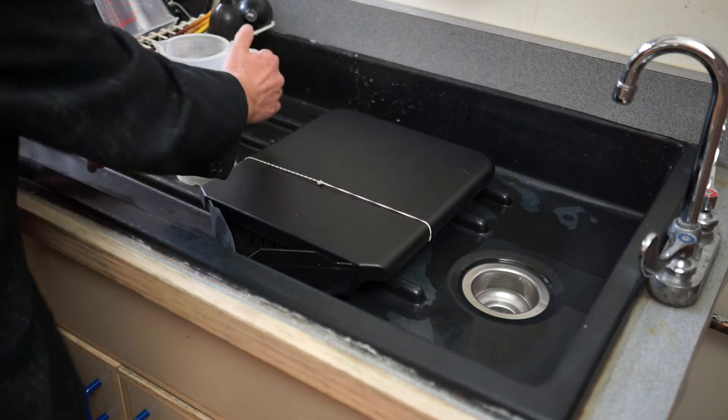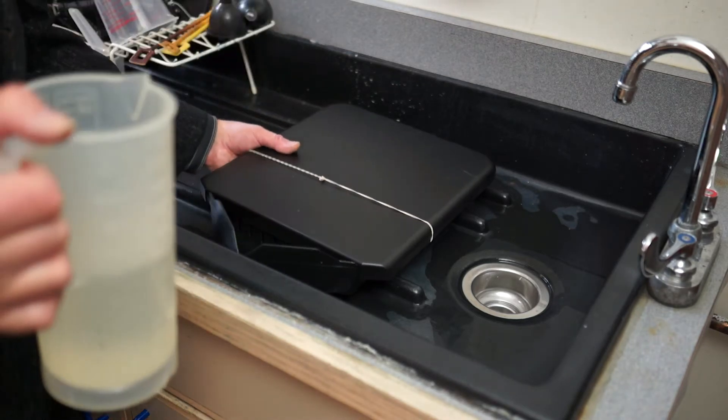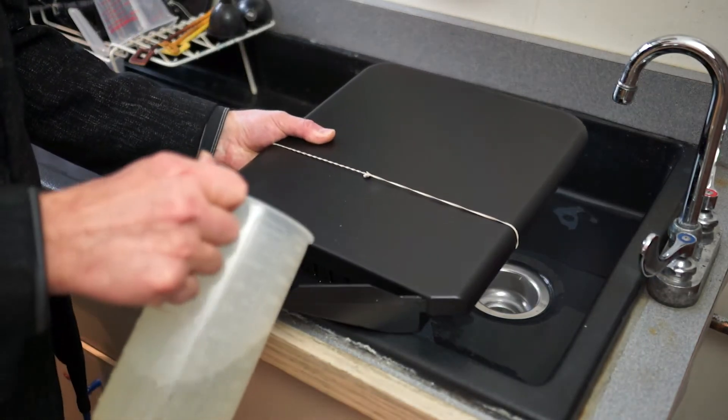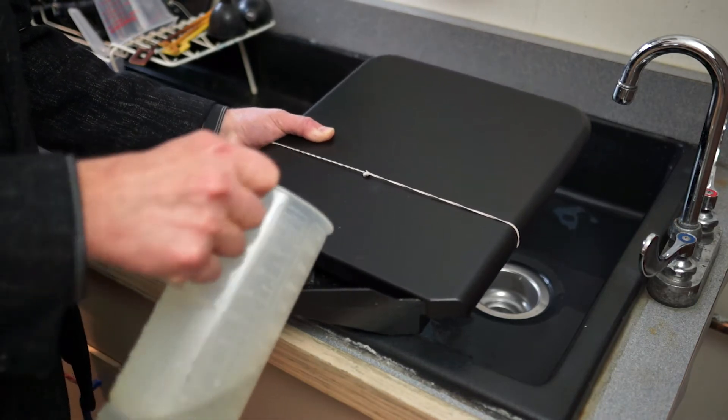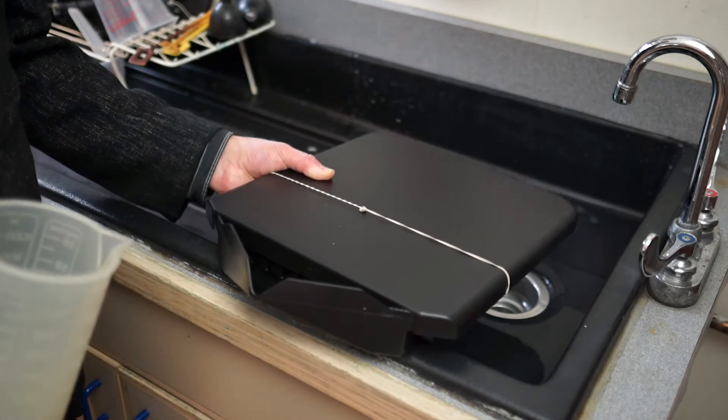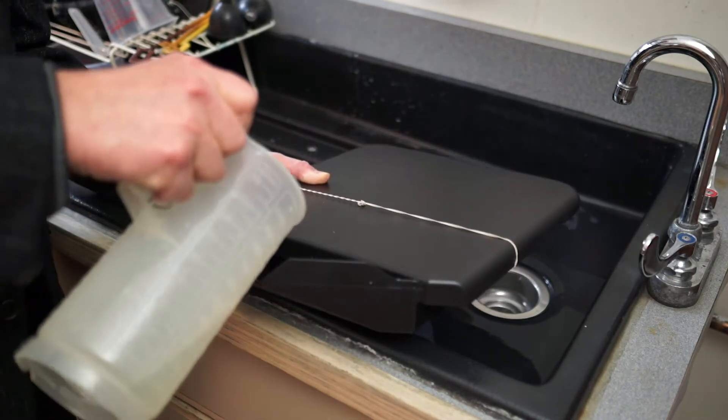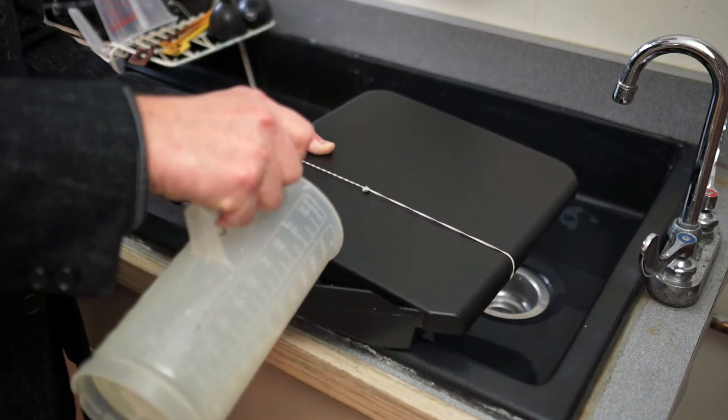After the pre-soak, you'll be pouring in the developer. And again, let it collect in the front and concentrate on it covering your film evenly as you fill.